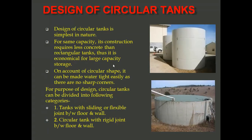Looking at photographs of circular tanks resting on ground — for the same capacity, circular tanks require less concrete than rectangular tanks, but they are economical only for large capacity. Rectangular tanks are preferred only for small storage. On account of their circular shape, circular tanks can be made watertight easily as there are no sharp corners. For design purposes, circular tanks are divided into two categories: tanks with sliding or flexible joint between floors and walls, and circular tanks with rigid joint between floors and walls.